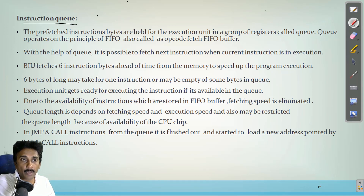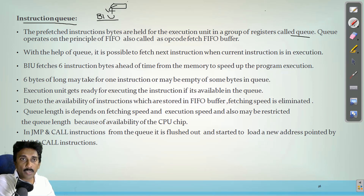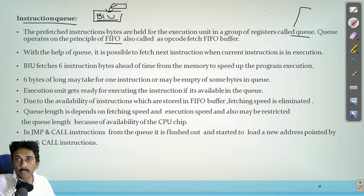Now let us go through the instruction queue in the bus interface unit. The prefetched instruction bytes are held for the execution unit in a group of registers called a queue. So instructions coming from memory to the microprocessor are held in the queue within the bus interface unit. The queue operates under the principle of FIFO — first in, first out.